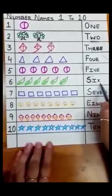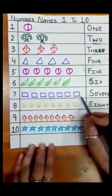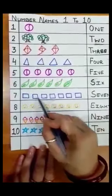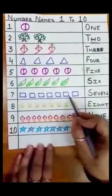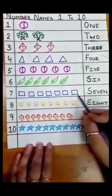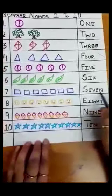Seven. Seven is numeral. And then squares. One, two, three, four, five, six, seven. Seven squares. The number name is S-E-V-E-N, seven.